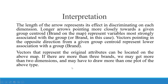Now let's start with the interpretation. The length of the arrow represents its effect in discriminating on each dimension. A longer arrow pointing more closely towards a given group centroid — that is a brand on the map — represents variables most strongly associated with that brand. Vectors pointing in the opposite direction from a given group centroid represent lower association with the group.